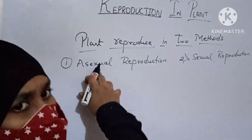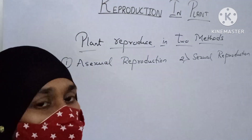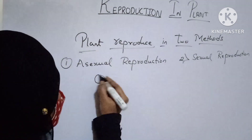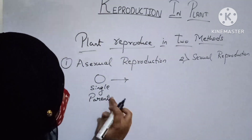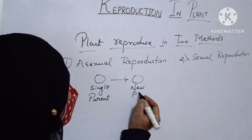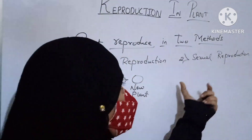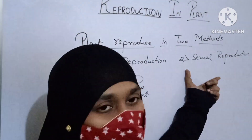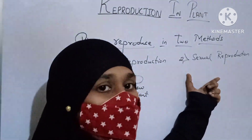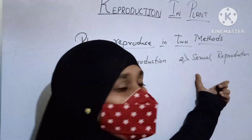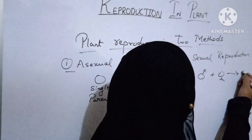In asexual reproduction, there is no fusion of male and female gametes. Gametes are the sex cells. Only a single parent can produce a new plant. In sexual reproduction, there is a fusion of male and female gametes. The male and female gametes fuse together to produce a new plant.